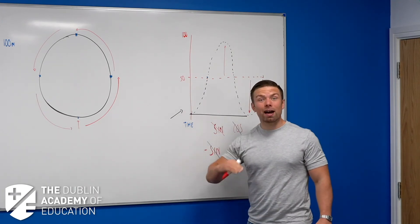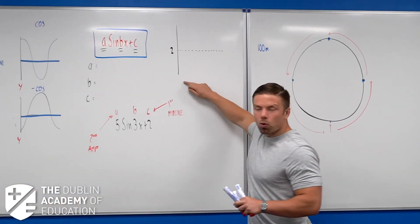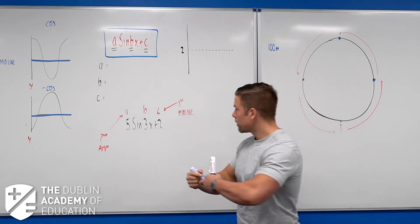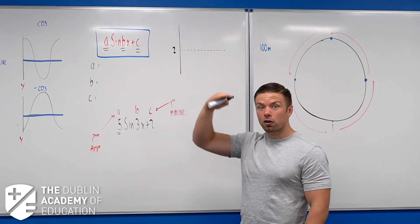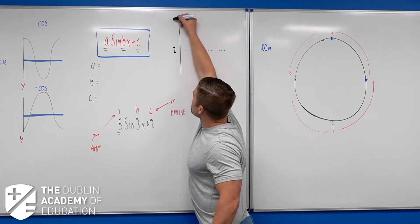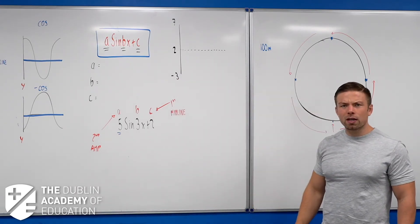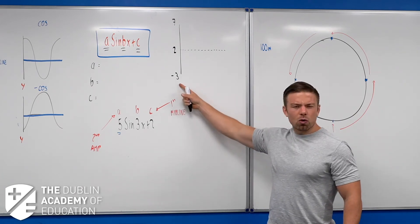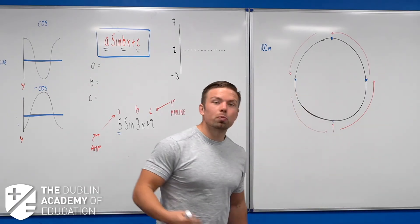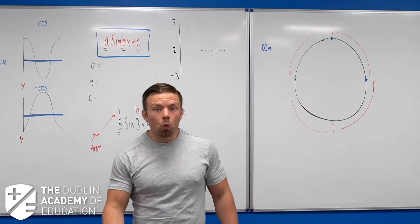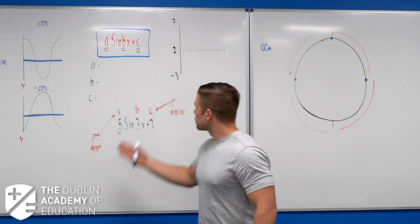From the midline and amplitude I can draw the maximum and minimum points of the graph. In this case the amplitude is 5, so the graph goes 5 above the midline — up to 7 — and 5 below — down to minus 3. You might ask how the ferris wheel can go below the surface. Remember, these don't all represent ferris wheels; it might be below water, or just a maths example with no real-life application.